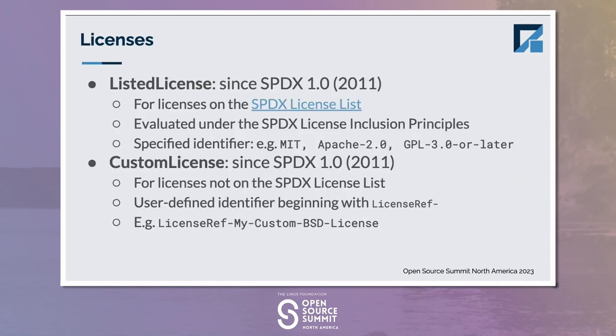For licenses themselves, these two concepts — listed licenses and custom licenses — have been around since the beginning of SPDX. Listed licenses are those on the official SPDX license list, and custom licenses are those that are user-defined in an SPDX document. We're changing the names slightly to help clarify their purpose and reflect some of the changes in properties that are available to define on each of these licenses.